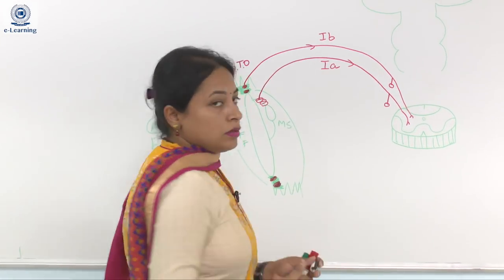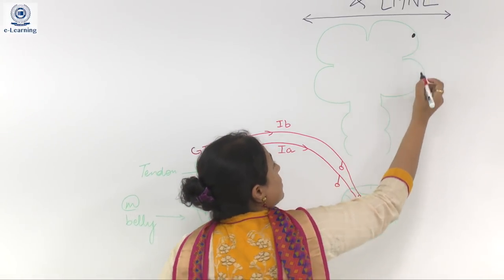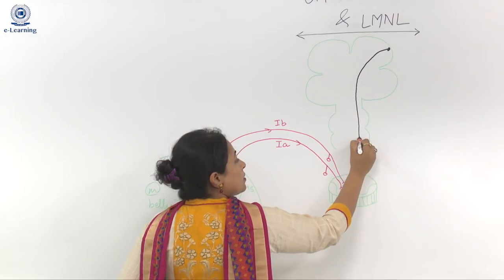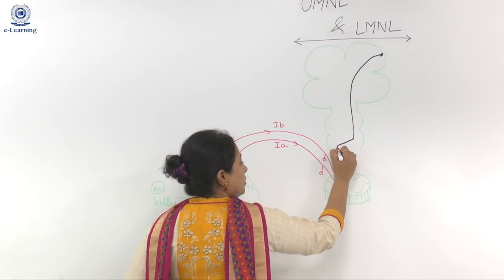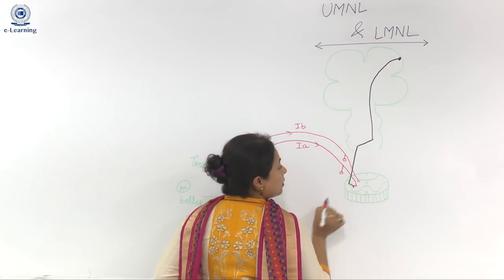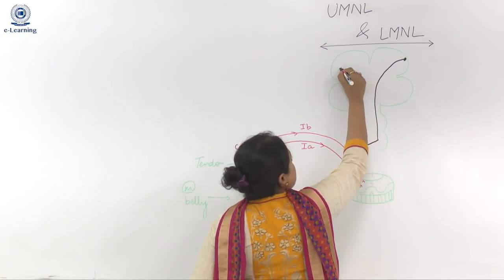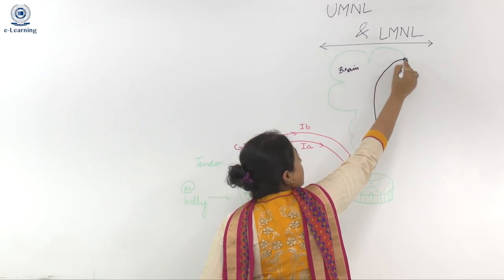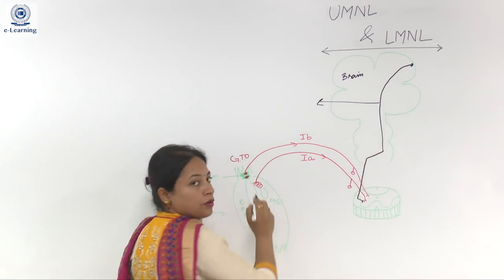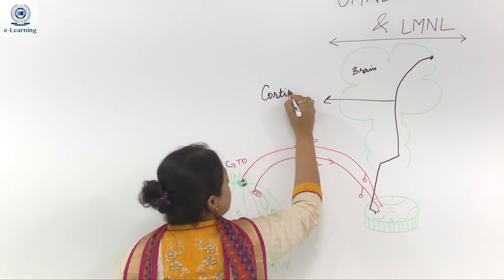Now let me draw the motor system. The motor system starts from the cortex; the neurons come down, and within the medulla there is decussation. They enter the white matter of the spinal cord and synapse on the alpha motor neuron. This pathway is the corticospinal tract, which is the major motor system tract.